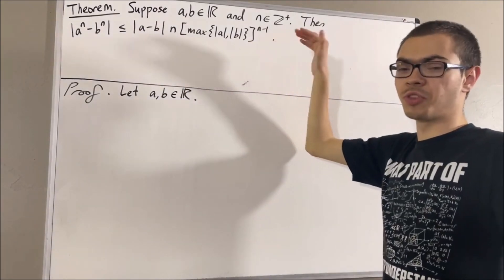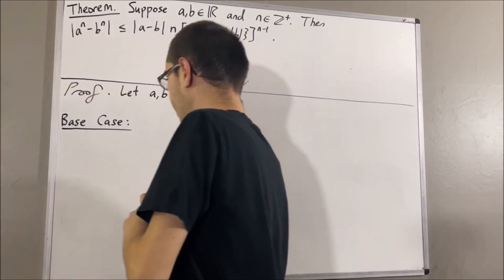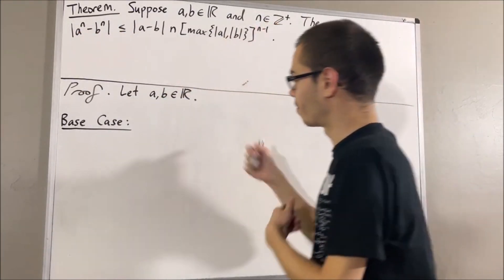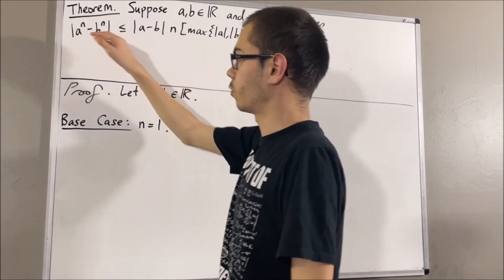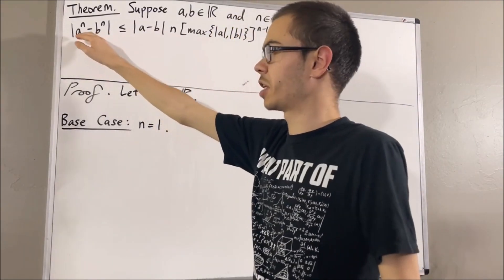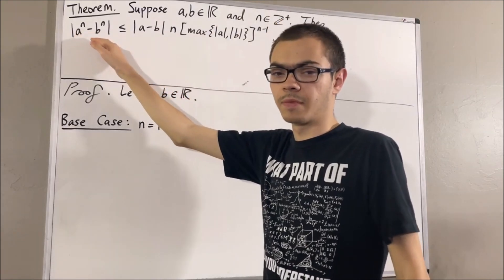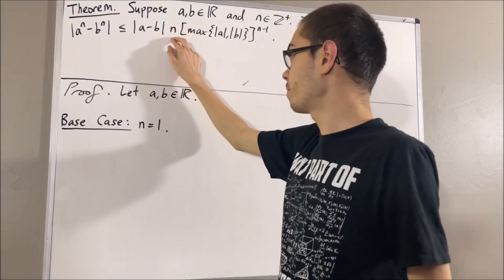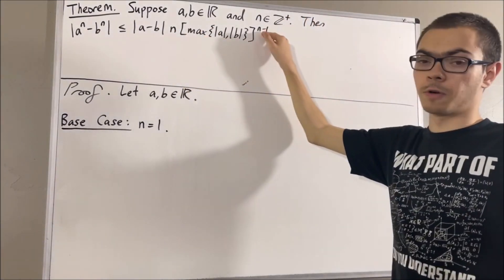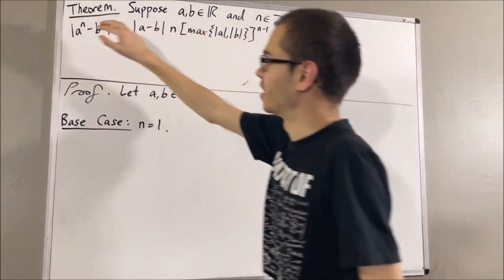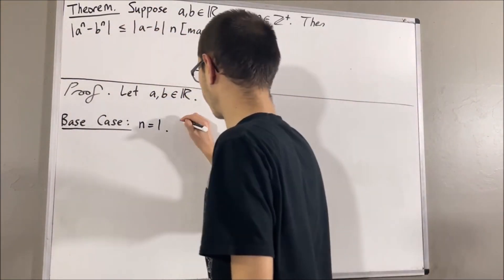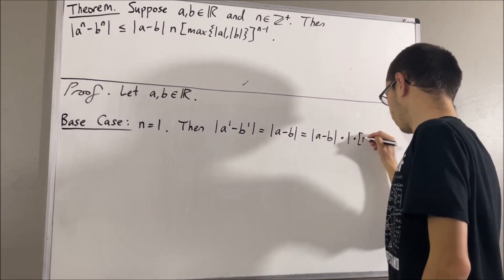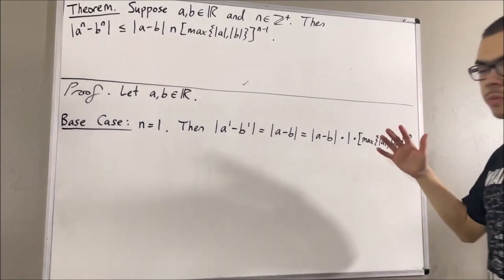Let's start with the base case. In the base case, we're trying to show that this inequality is true in the case where n is equal to 1. If we look at what the left-hand side becomes, that's just going to be the absolute value of a minus b. And the right-hand side is going to be the absolute value of a minus b, times 1, times a real number to the power of 0, which is just 1. So the left-hand side and the right-hand side are going to be equal, and this completes the base case.